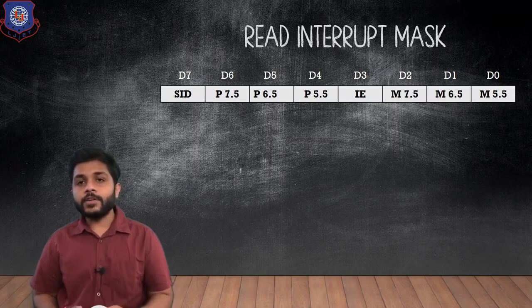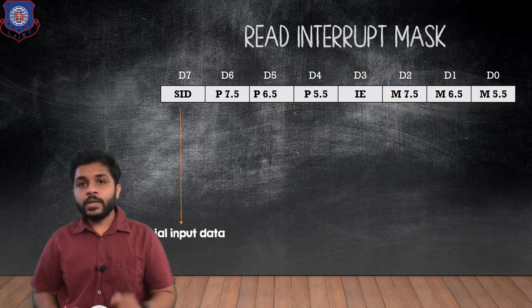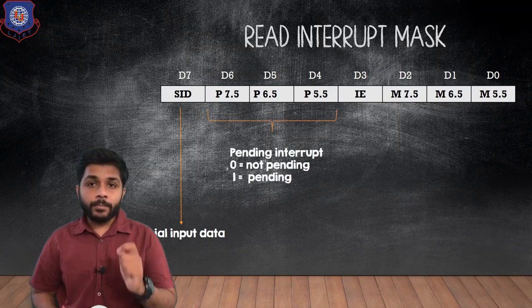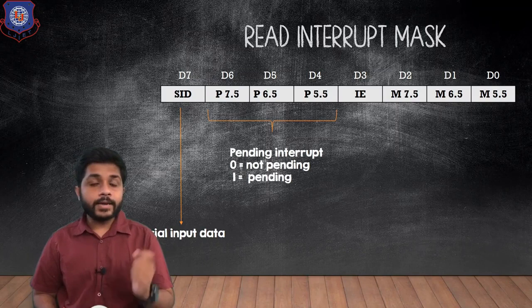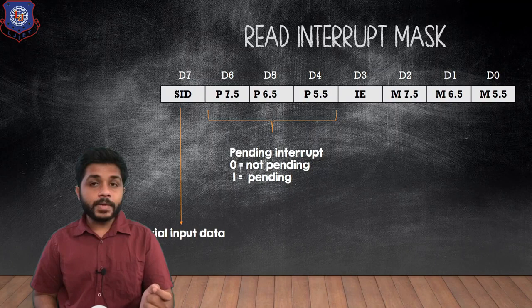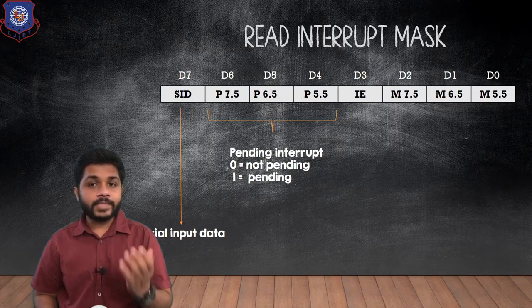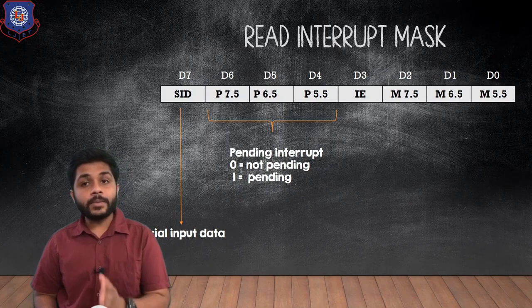The D7 bit represents serial input data. The D6, D5, and D4 bits represent pending interrupts. If any of these bits is 0, it means that particular interrupt is not pending, and if any of these bits is 1, it means that particular interrupt is pending.